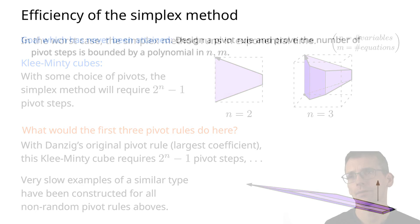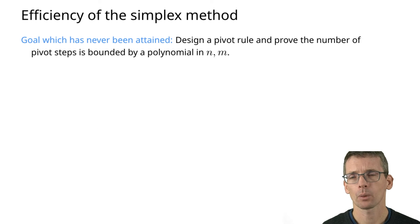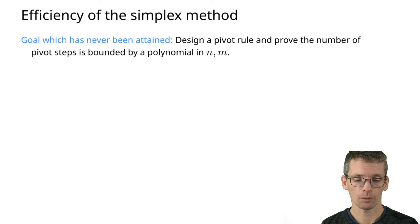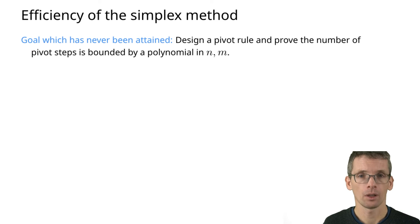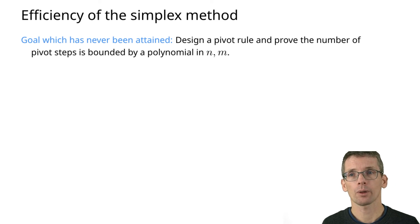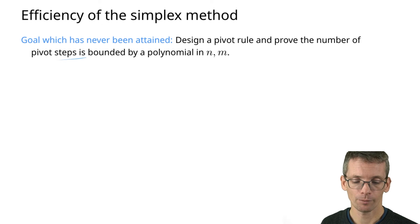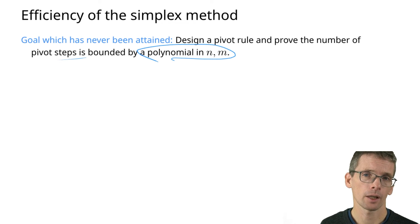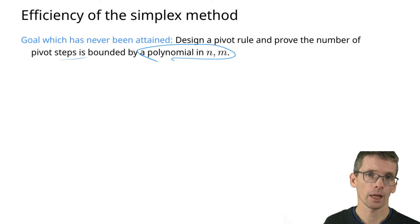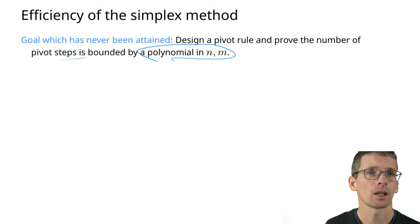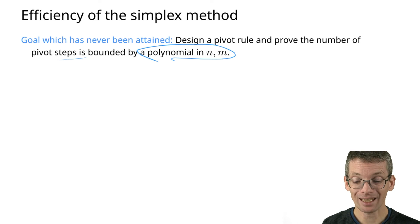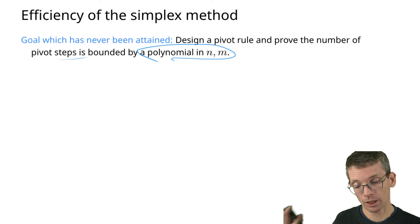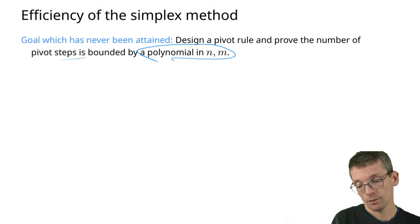What we would like to have — but hasn't been achieved so far — is a pivot rule for which we can prove that the number of pivot steps is polynomial in n and m (the number of constraints). But so far, for all the standard pivot rules, we can actually prove exponential worst-case behavior.